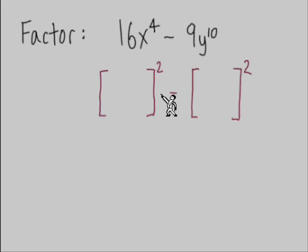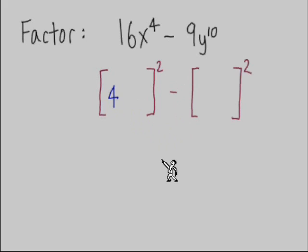Number to the second power to equal 16, that's going to be the 4. Now let's think about what we need to have in terms of the x inside parentheses. We know that just an x inside this box is not going to work. That's x to the second power would give us x squared, but we need x to the fourth.